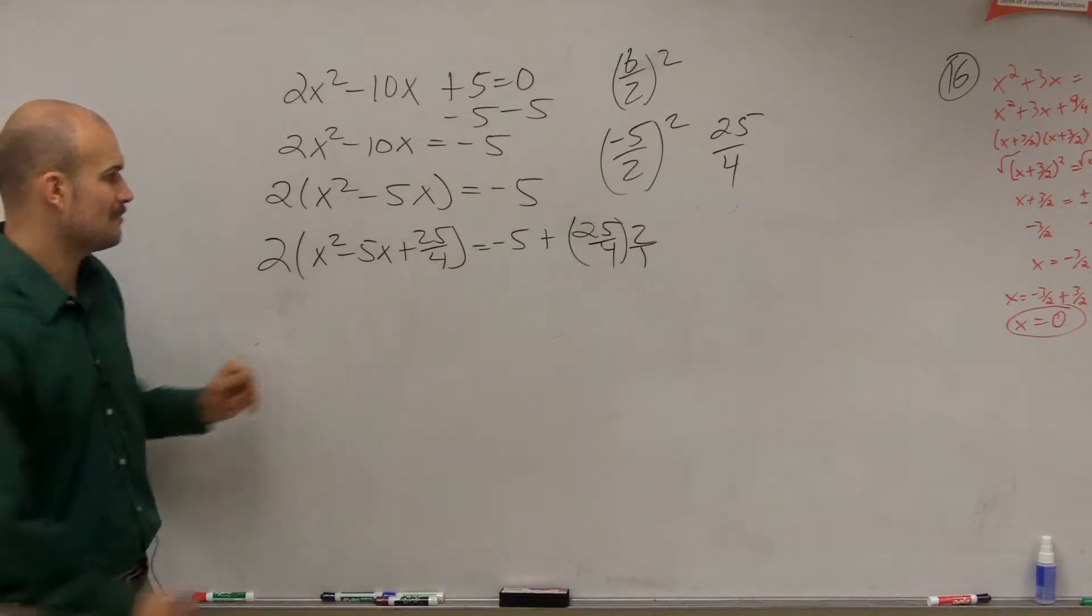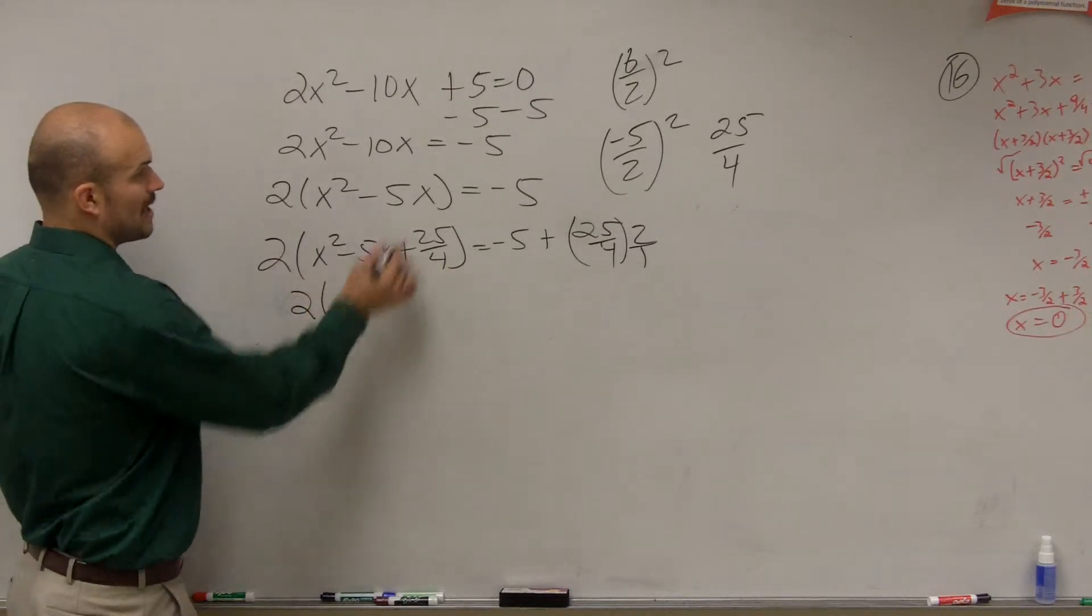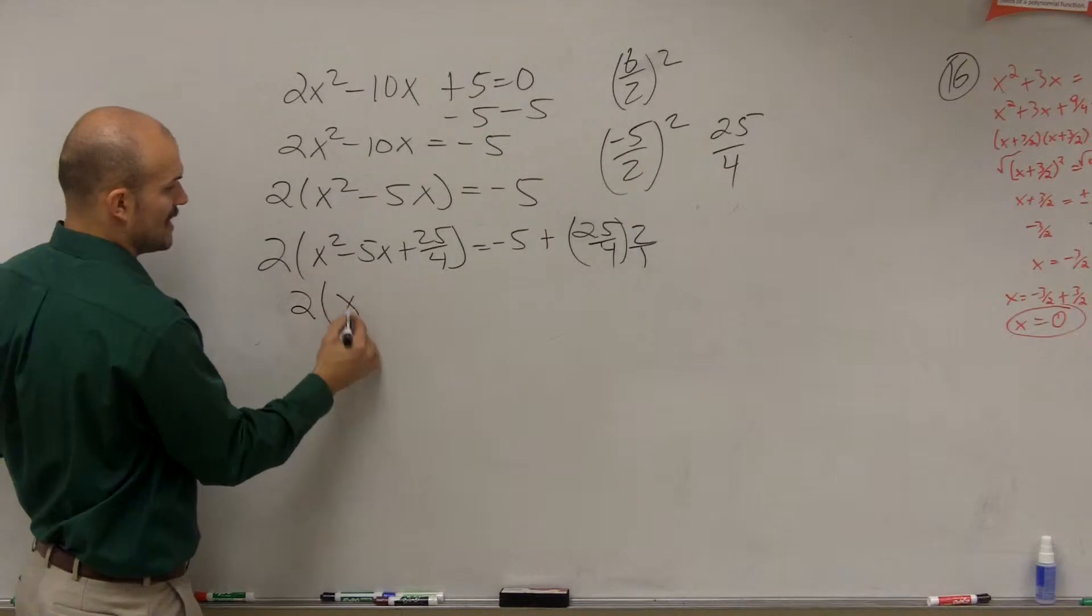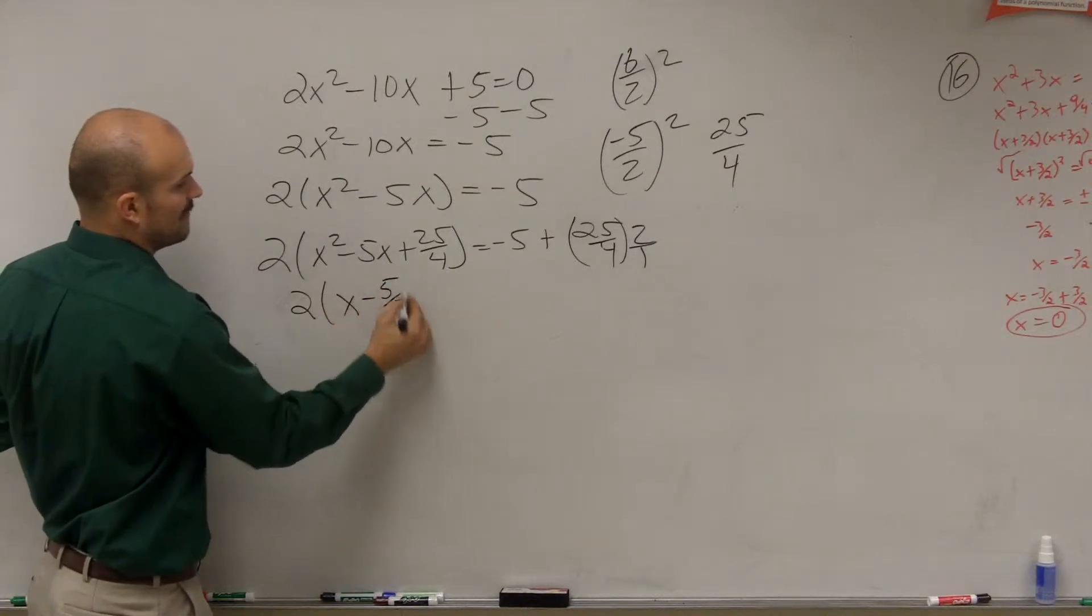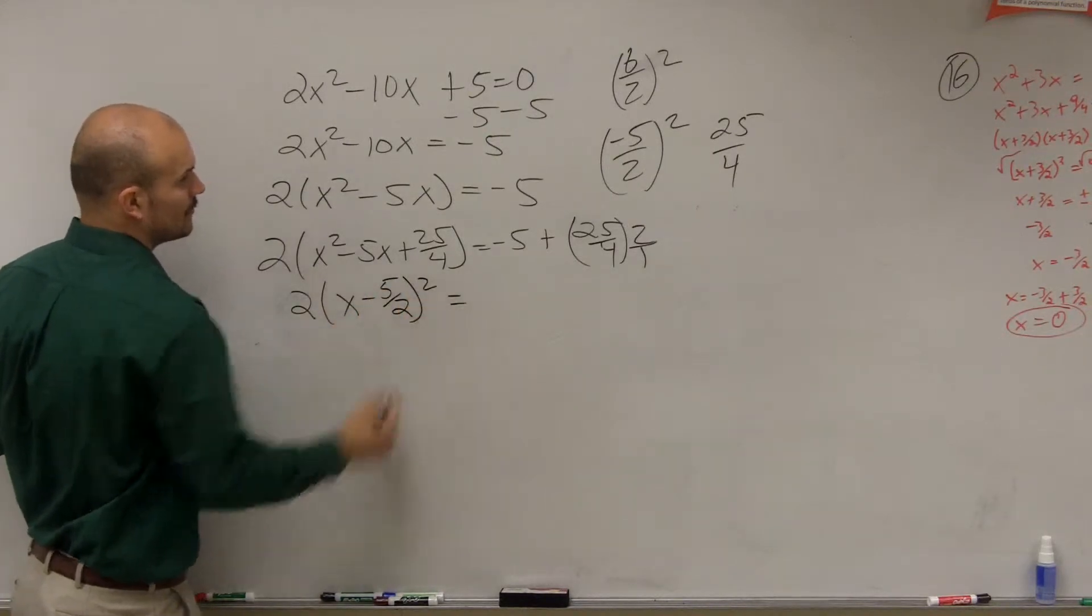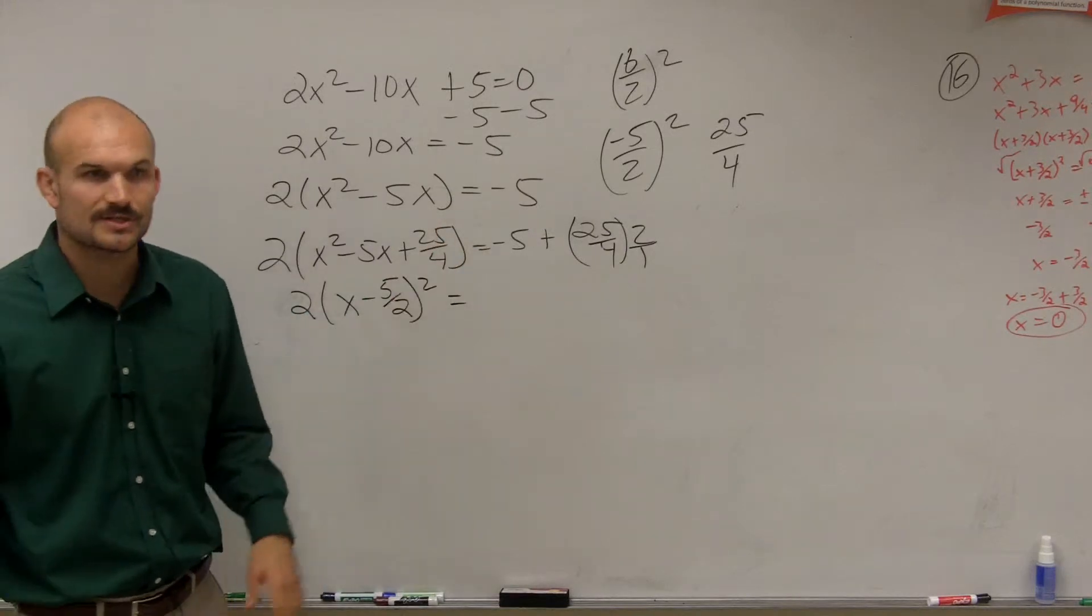So now we can write this as a perfect square. So I take my b divided by 2, which would be x minus 5 halves squared equals, and then yes, now we have some work to do over here.